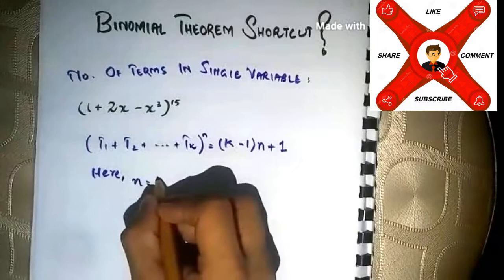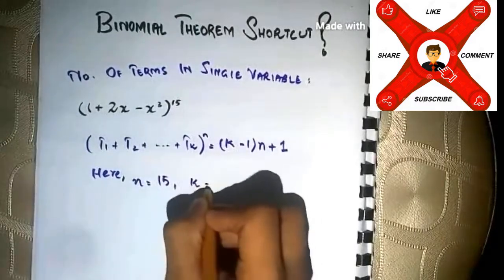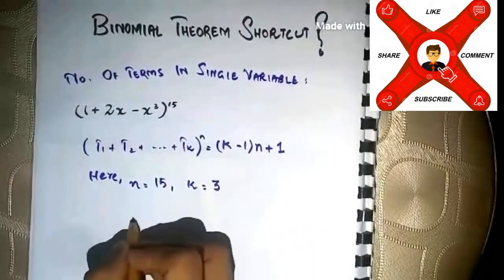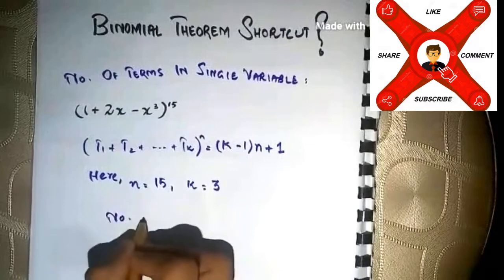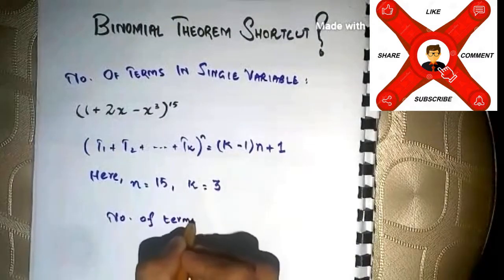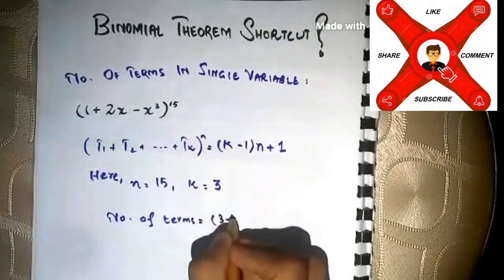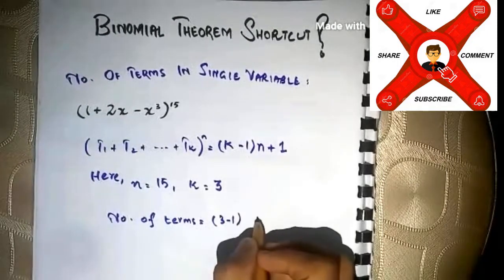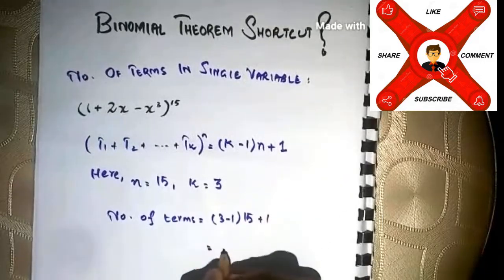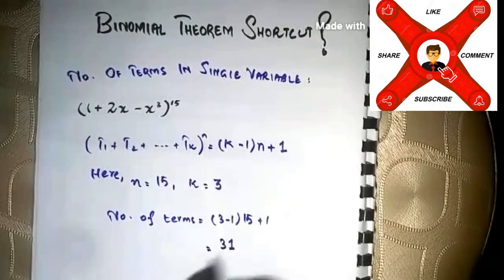In this expansion, n is 15 — that is the power of the expansion — and k is 3, because we have only 3 terms in this expansion. Now, we simply put it in the formula to find the number of terms: 3 minus 1 into 15 plus 1. By simplifying, we get 31. So the number of terms in this expansion will be 31.